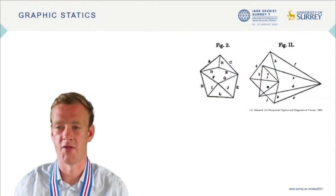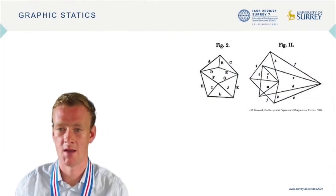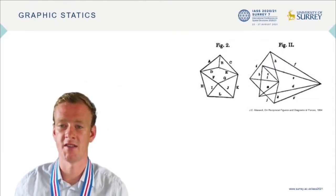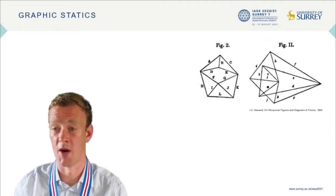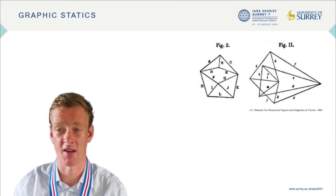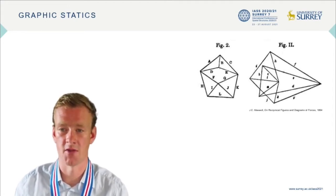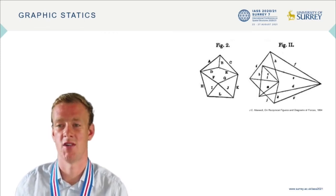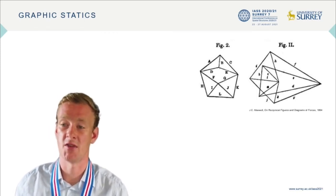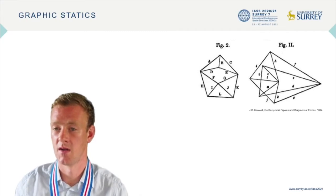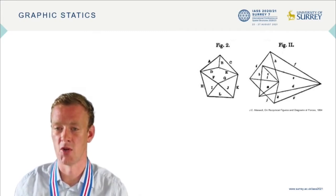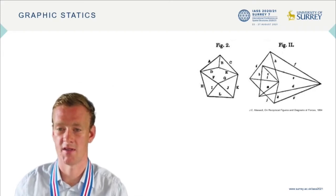Graphic Statics is a graphical method for describing the equilibrium of pin-jointed frameworks. Pioneered in the 19th century by the likes of Maxwell, Cremona, Rankin and Coleman, it describes both the form of the structure and the forces within the structure. It has been used extensively in design, and has recently seen a resurgence in popularity due to modern computational power, which allows the designer direct control of the process.